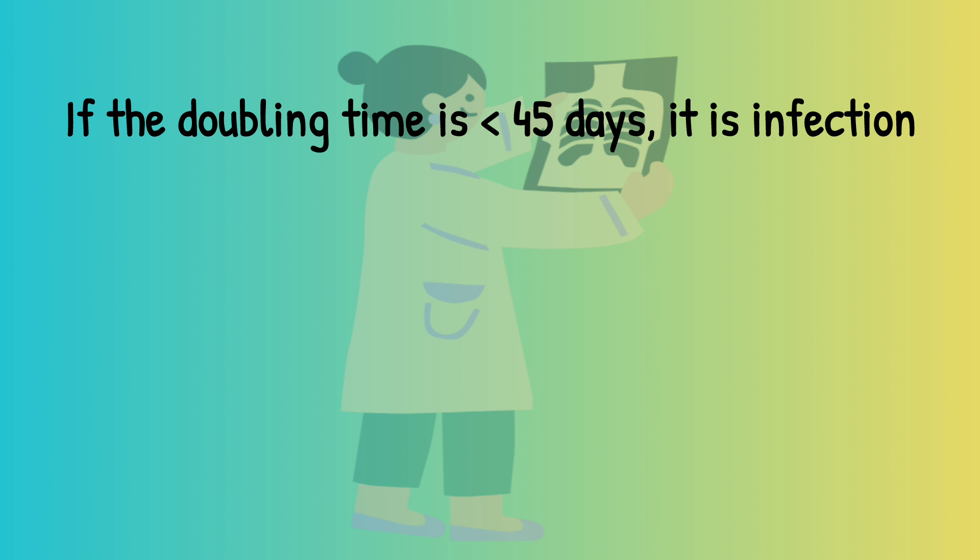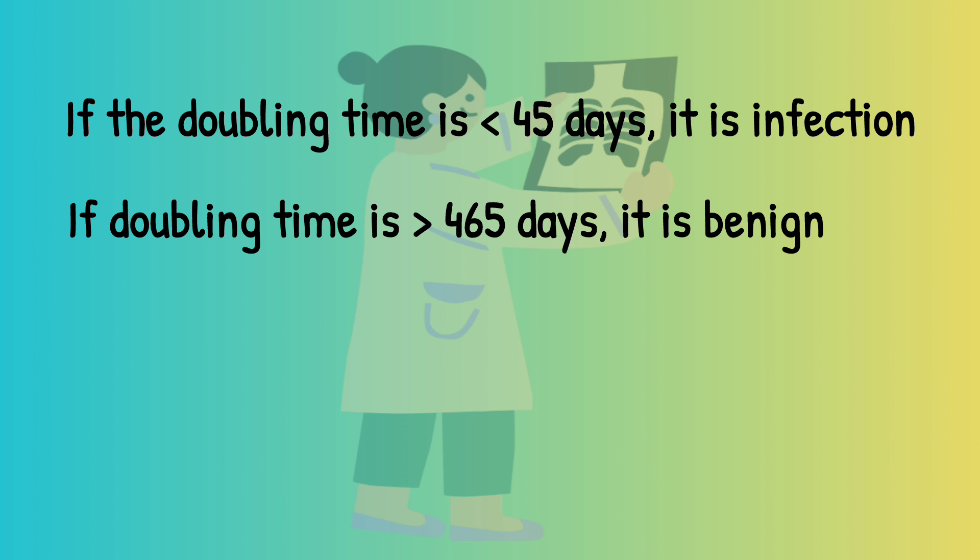If the doubling time is less than 45 days when we compare it to old chest x-ray, it is likely an infection. If the doubling time is more than 465 days, which is almost one and a half years, it is a benign lesion.